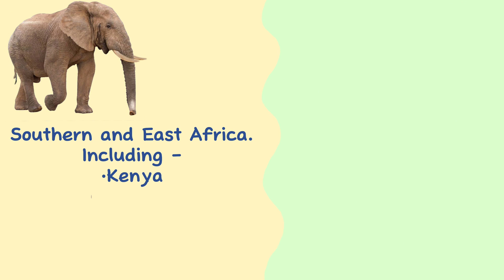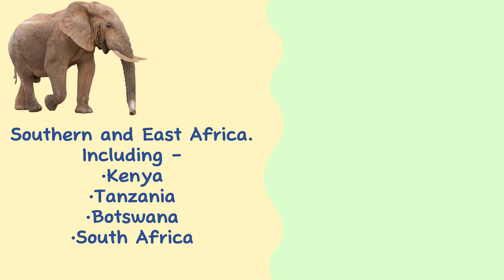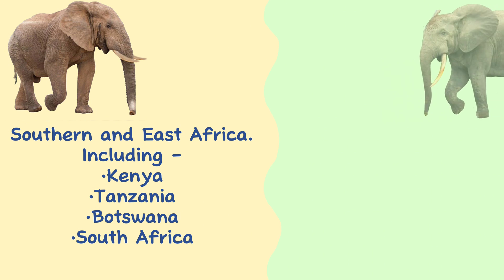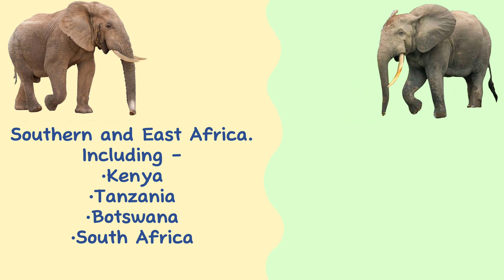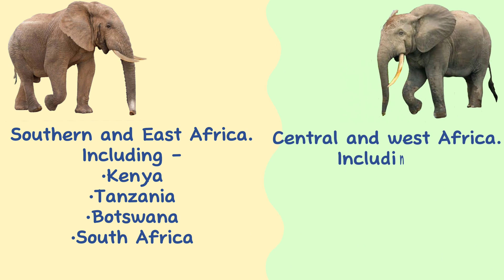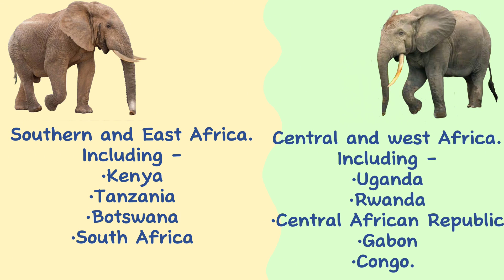Range. You're most likely to find savannah elephants in Southern and East Africa, with some of the largest herds found in Kenya, Tanzania, Botswana, and South Africa. The African forest elephant is primarily found in Central and West Africa, most likely around Uganda, Rwanda, Central African Republic, Gabon, and Congo.